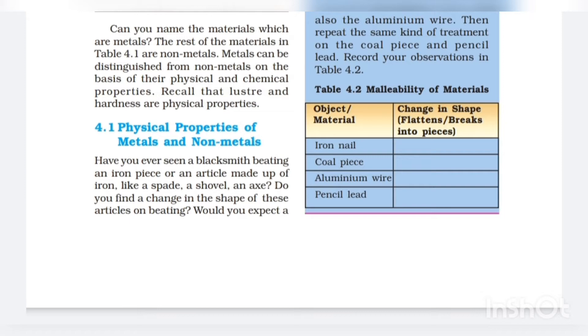Metals can be distinguished from non-metals on the basis of their physical and chemical properties. So underline this point and you should learn about this. Recall that lustre and hardness are physical properties. Then we have physical properties of metals and non-metals.